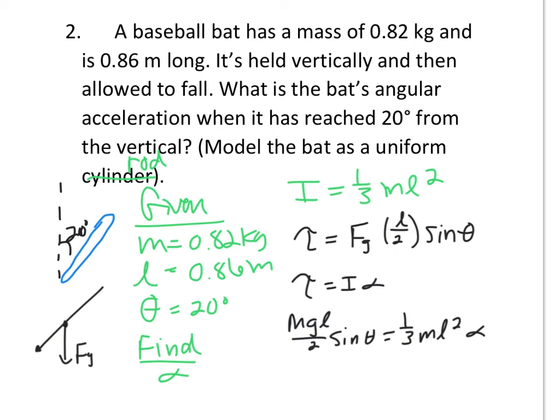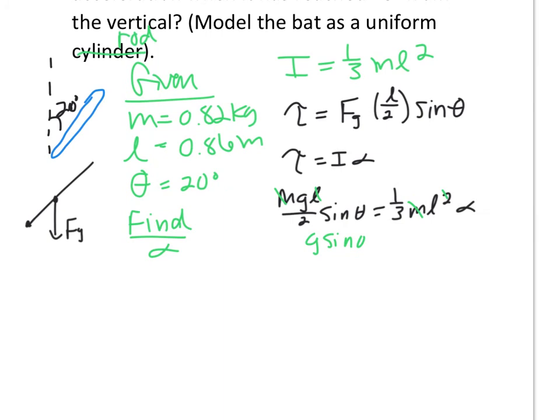Okay, so some things go away. My m's cancel. One of the l's goes away. So let's clean this up a little bit. We get G sine theta over 2 equals alpha L over 3. So now isolating alpha, we get 3 halves G sine theta over L equals alpha.